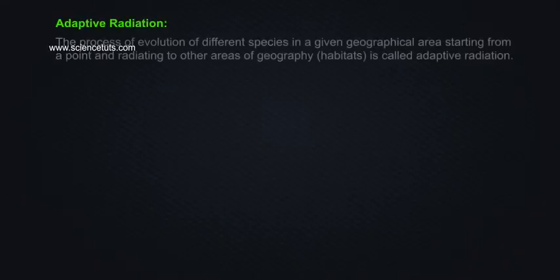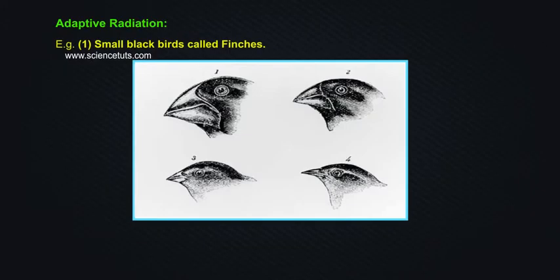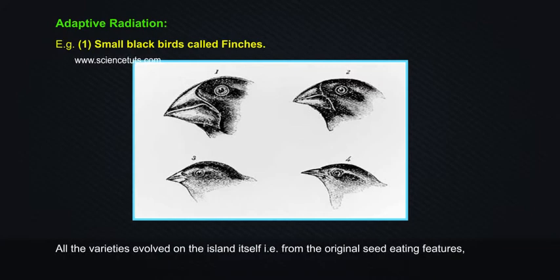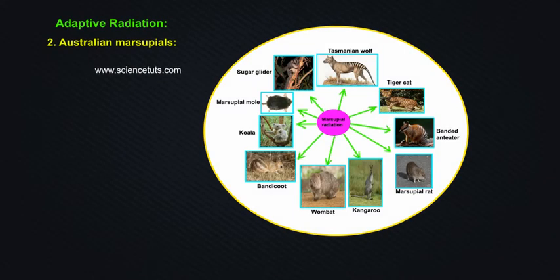Adaptive radiation is the process of evolution of different species in a given geographical area, starting from a point and radiating to other areas of geography and habitats. Example one: small blackbirds called finches. There were many varieties of finches on the same island, all evolved on the island itself — from the original seed-eating features, many other forms with altered beaks arose, enabling them to become insectivorous and vegetarian finches.